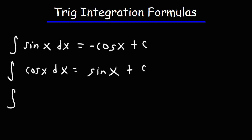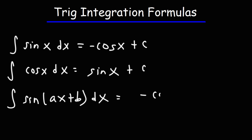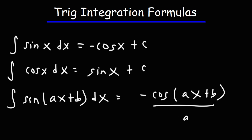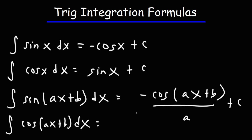Sometimes you might see these trig functions in this format. The indefinite integral of sine ax plus b is going to be negative cosine — the angle ax plus b will be the same, but then it's divided by the derivative of ax plus b, which is a, plus c. It works the same way for cosine. So the indefinite integral of cosine ax plus b — instead of just putting over a, you can write 1 over a times sine ax plus b plus c.